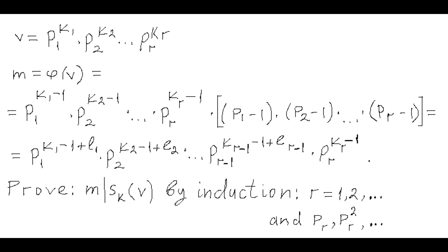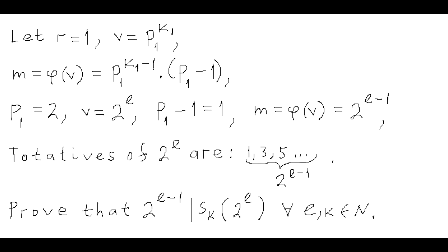Also, within each induction step, we will do internal induction, incrementing the exponent of the highest prime factor. Let r be equal to 1, so number v equals some prime number p1 to some power k1. Then m, equal to phi of v, equals p1 to the k1 minus 1 times p1 minus 1. It turns out that by definition of number v in this problem, p1 can only be 2, because if p1 is any prime greater than 2, then p1 minus 1 is even and has prime divisor 2, which v doesn't have.